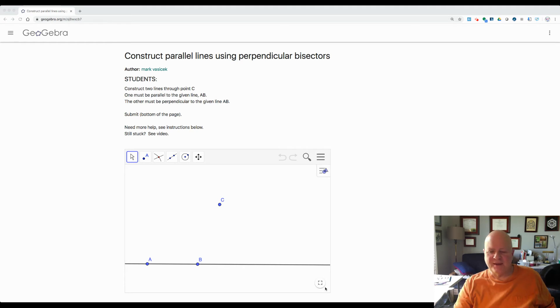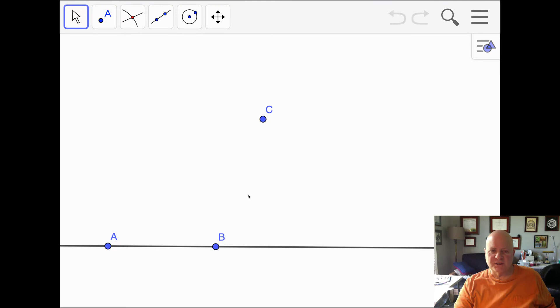So we start with line AB and point C which is not on that line. I will share my large screen so that you can see this. You should try this on your own if you're stuck. I have written instructions for how to do this and this video is also to help you if you're still stuck.